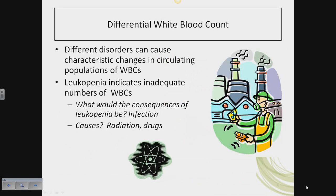Differential white blood cell counts: when a person is suspected of having a white blood cell disorder, blood is obtained and a blood smear prepared. A differential WBC count tallies how many of each type of white blood cell is found. They're looking for traditional values: 60, 30, 6, 3, 1 — neutrophils, lymphocytes, monocytes, eosinophils, basophils. Never let monkeys eat bananas.